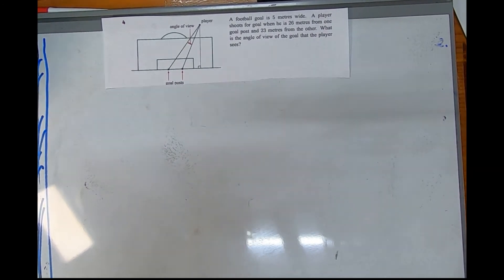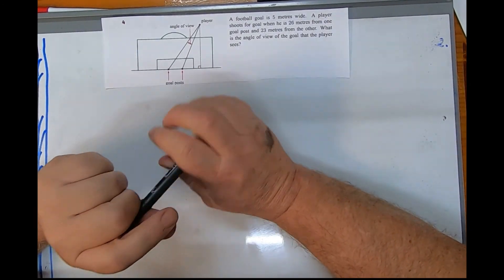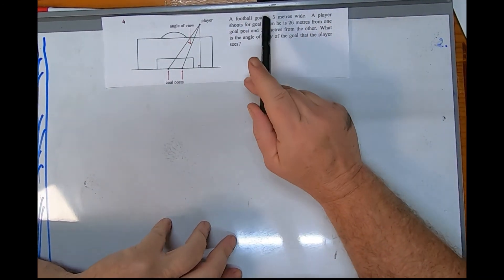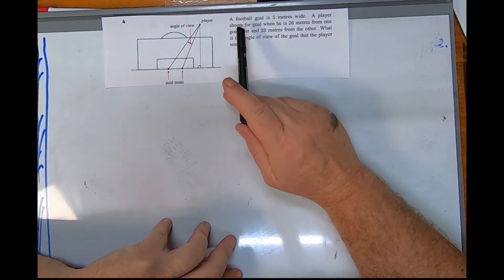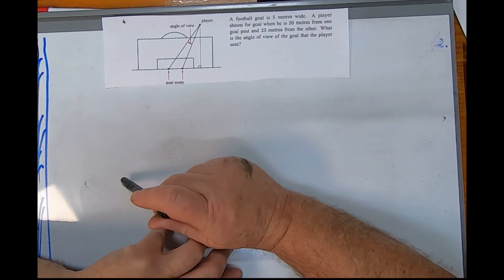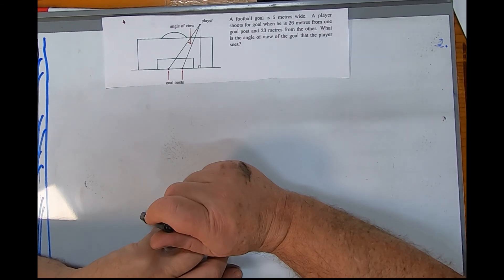Now presenting: a soccer or football goal, it's five meters wide. A player shoots for goal standing out here, he's 26 meters from one post and 23 from the other.